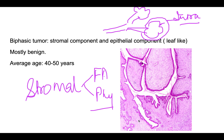It is a biphasic tumor, just as fibroadenoma was also biphasic, meaning it has both a stromal component and an epithelial component. How it differs from fibroadenoma is that the epithelial component has a leaf-like shape. This leaf-like or phylloid pattern is very characteristic of phyllodes tumor.